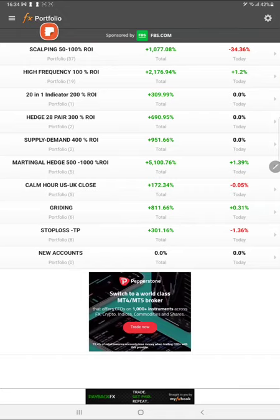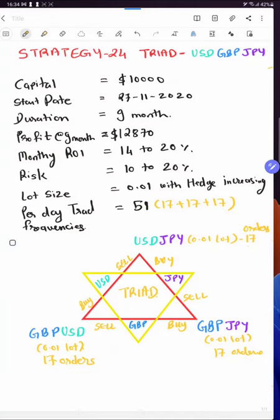We are going to obtain triangle GBPUSD, GBPJPY, USDJPY, or you can say triad. That's the most complex strategy and we are going to study the MT4 account plus profit and loss and risk and complete statement and how many trades have been placed during this nine months period of time.